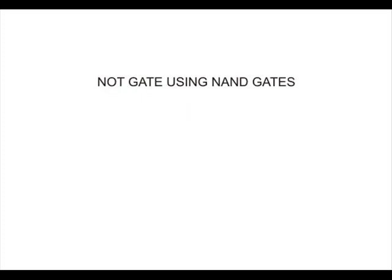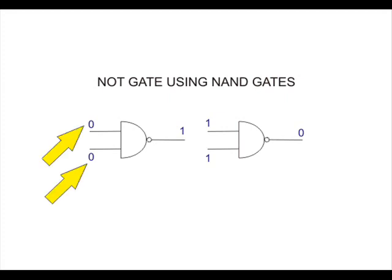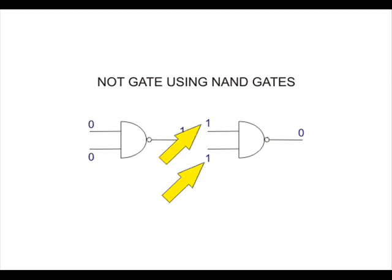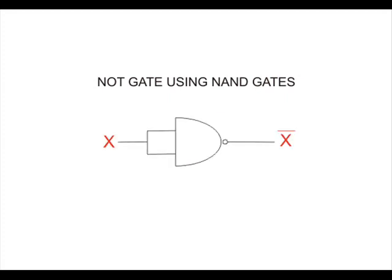Now we will try to realize a NOT gate using a NAND gate. When both inputs of a 2-input NAND gate are 0, the output is 1, and when both inputs are 1, the output is 0. Hence, a NOT gate can very easily be realized from a NAND gate by applying common inputs to it. This is done by short-circuiting all the input terminals of a NAND gate, where x is either 1 or 0.